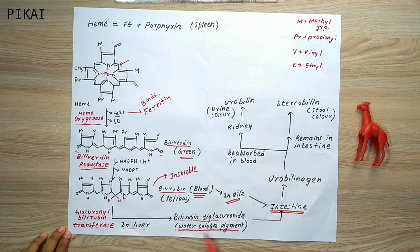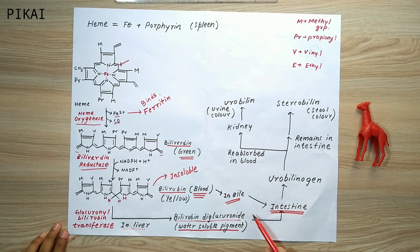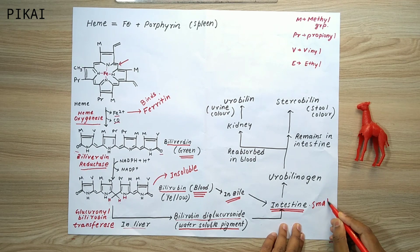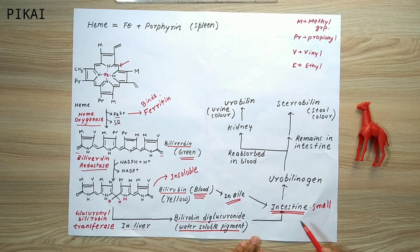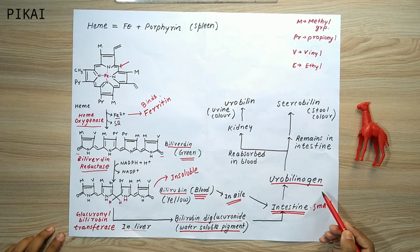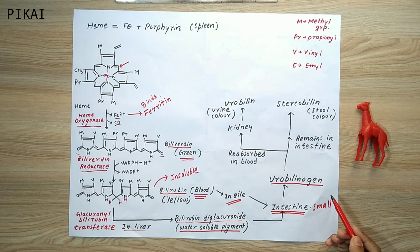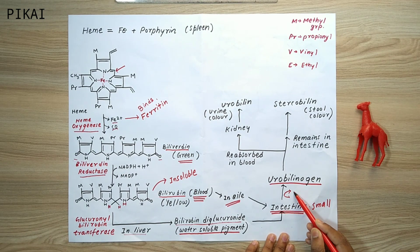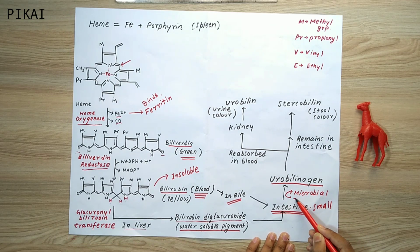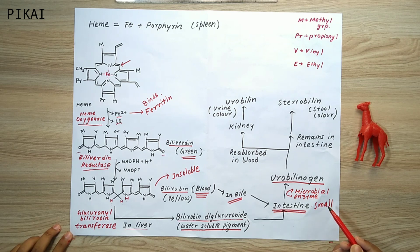The soluble bilirubin diglucuronide passes through the bile into the small intestine. Inside the small intestine, microbial enzymes convert bilirubin diglucuronide into urobilinogen.